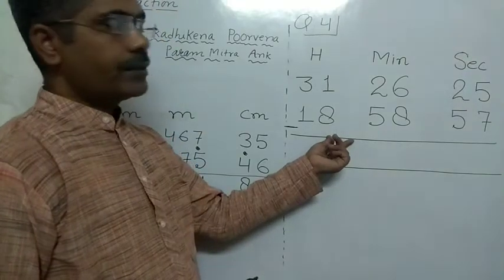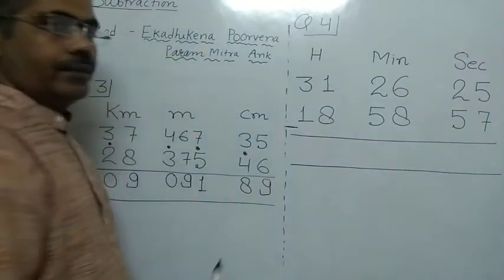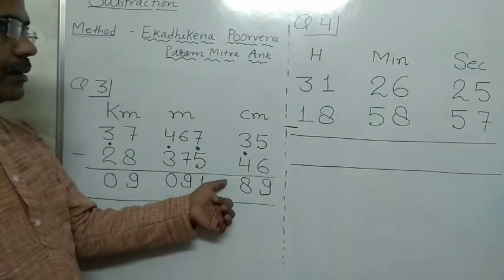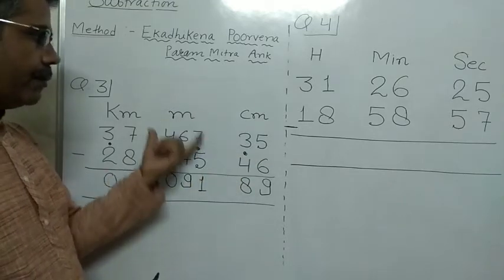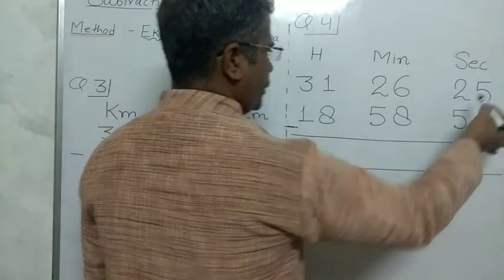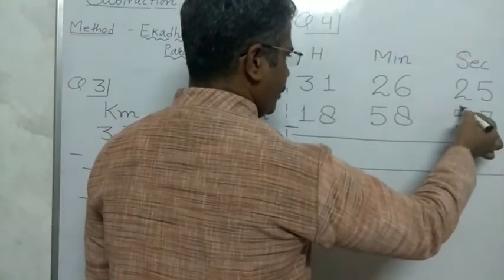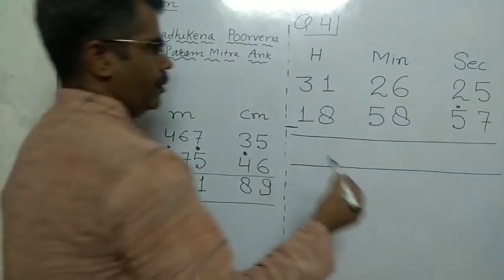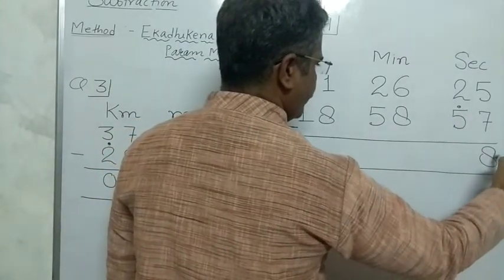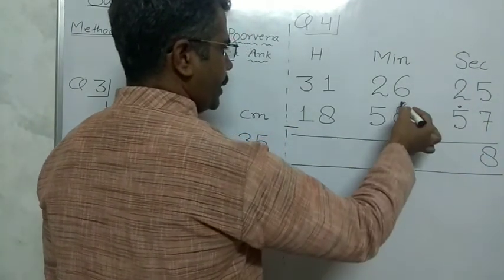Next question, 4th. Here, the base of seconds is 60 and the base of minutes is 60. We also know centimeter base is 100 and meter base is 1000. Solving this: 7 cannot be subtracted from 5, so we use Ekatecane. Pramikkar Ankh of 7 is 3. 3 plus 5 is 8. Again 6 cannot be subtracted from 2, so we use Ekatecane here.